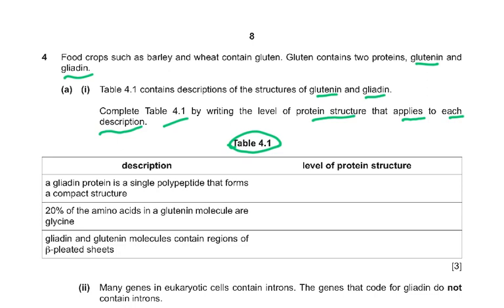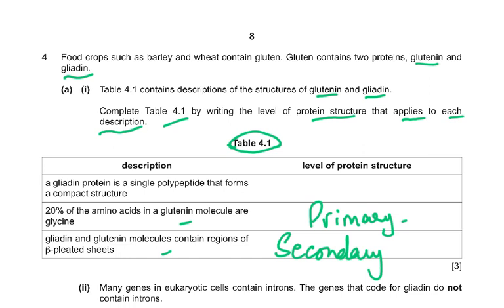Glyadin protein is a single polypeptide that forms a compact structure. 20% of the amino acids in a Glutenin molecule are Glycine. Glyadin and Glutenin molecules contain regions of Beta-pleated sheet. The primary structure — because it is telling us the number and sequence of amino acids, 20% of them are Glycine in Glutenin. A single polypeptide forming a compact structure gives us the tertiary structure — because it can't be quaternary: one polypeptide forming a compact structure is tertiary.